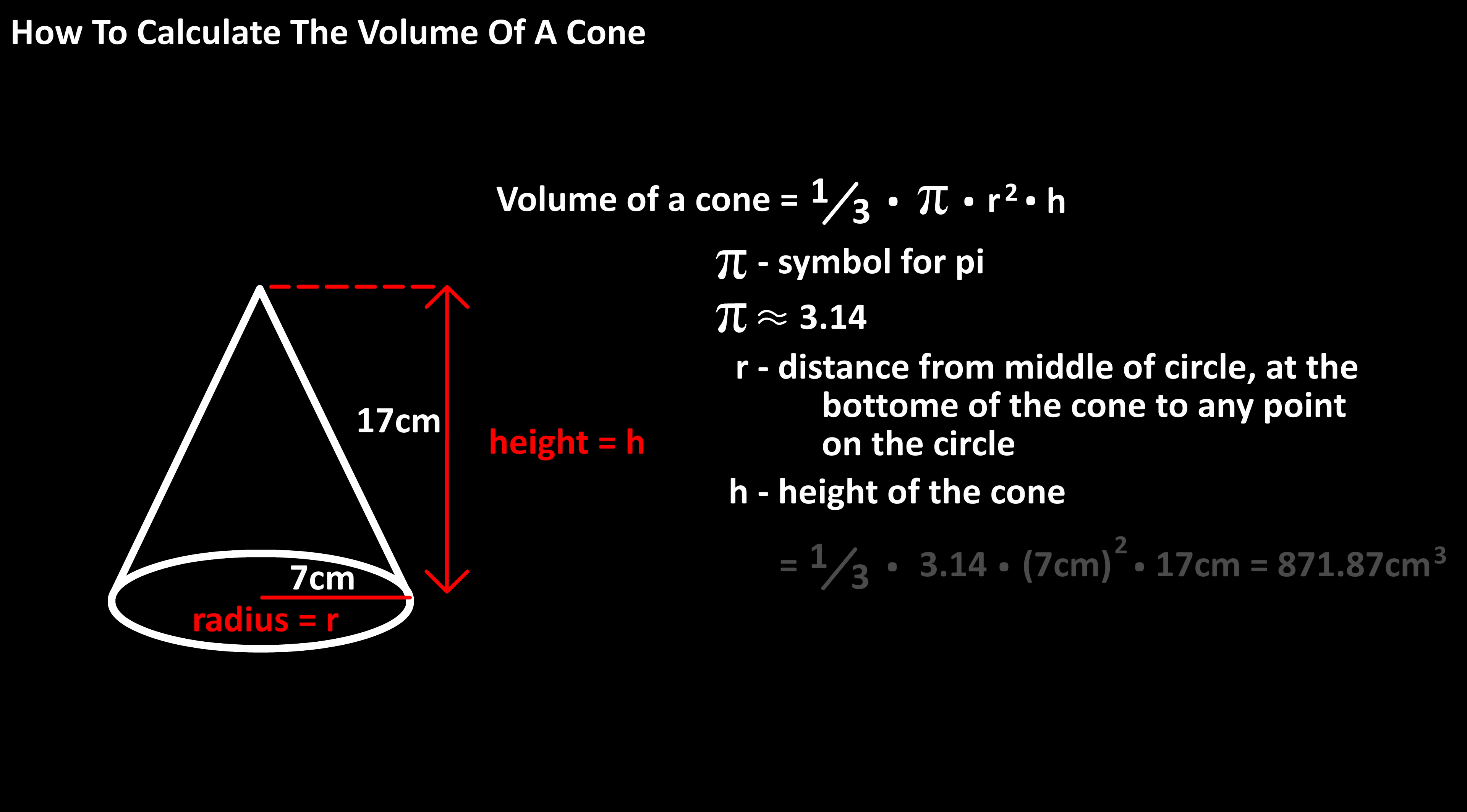From the diagram, we have 1/3 times 3.14 times 7 centimeters squared times 17 centimeters. Calculating out and rounding off, we get 871.87 centimeters cubed. It's cubed because there are 3 centimeters in the multiplication.